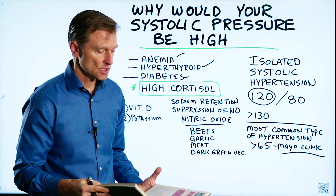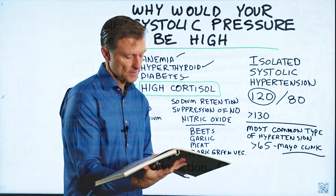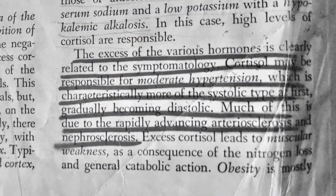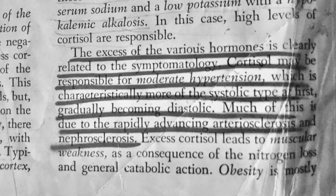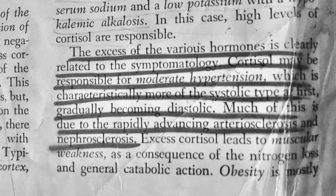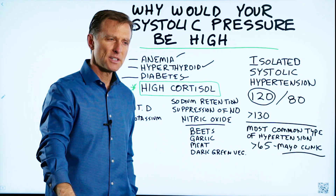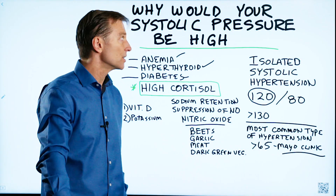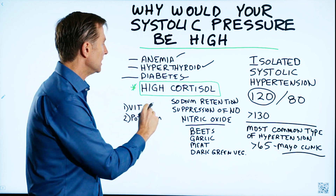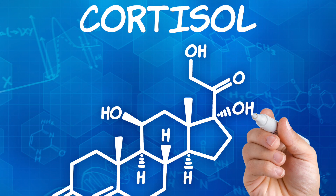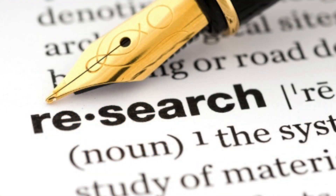This is under the section on a condition where you have high cortisol. I'm going to read this: 'Cortisol may be responsible for the moderate hypertension, which is characteristically more of the systolic type first, gradually becoming diastolic.' This information is very difficult to find with a general search on high systolic blood pressure, but if you type in high cortisol and blood pressure, you get a lot more. You have to know the link before you even know to research it.